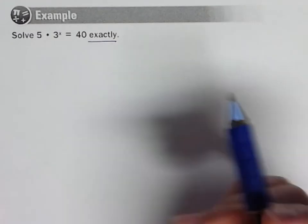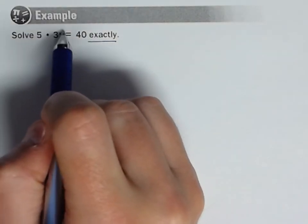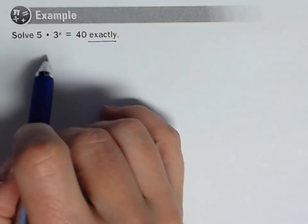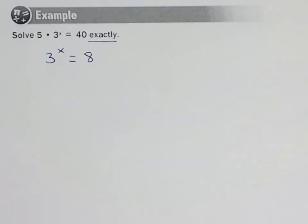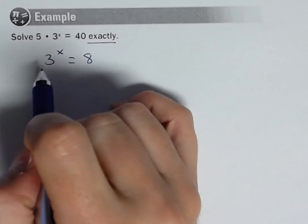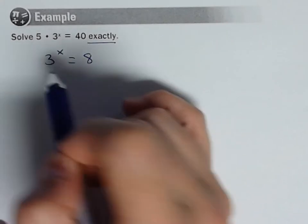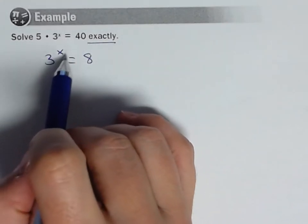We want to isolate the exponential, so we want to get this all by itself. Of course, we would just divide by 5, so 3 to the x equals 8. Maybe when you first start, they're already isolated, so you don't have to worry about that step. But otherwise, get the exponential by itself.